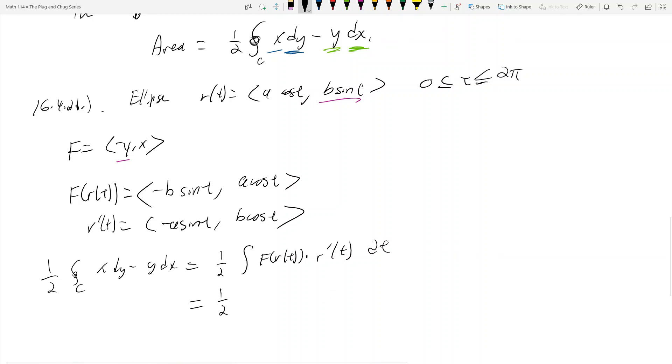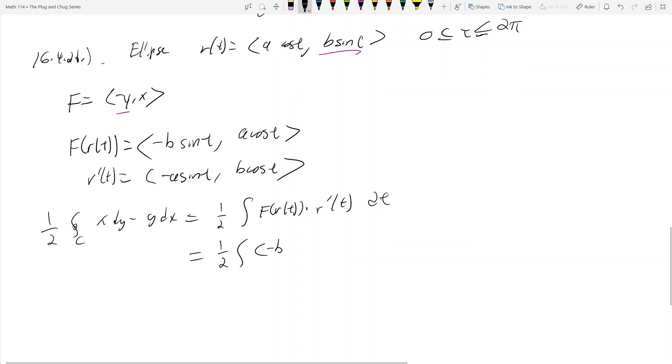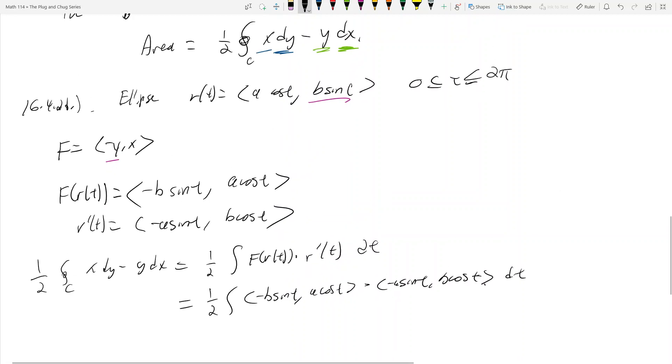This is 1/2 the integral of (-b sin t, a cos t) dotted with (-a sin t, b cos t) dt. And t is from 0 to 2π in our case.